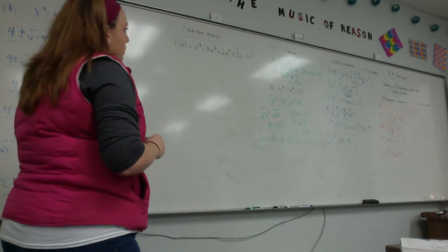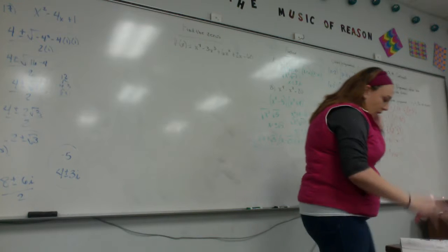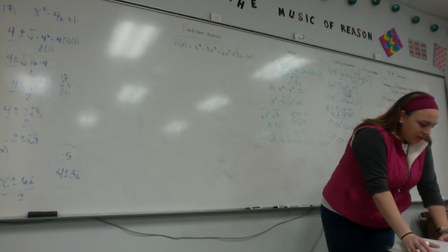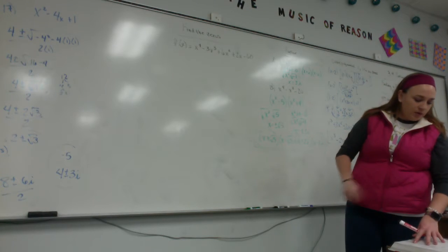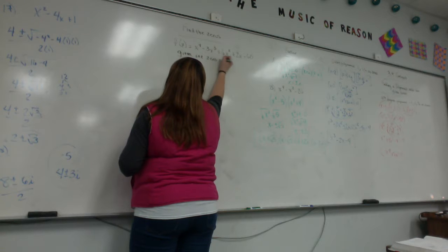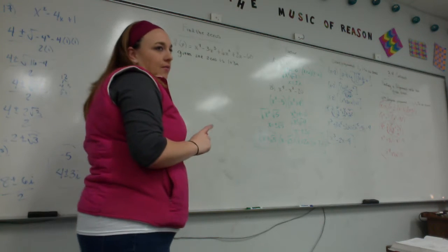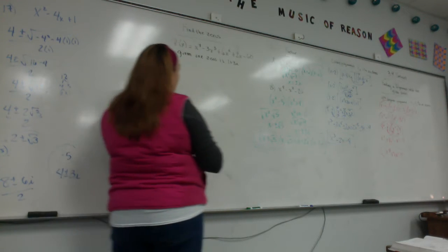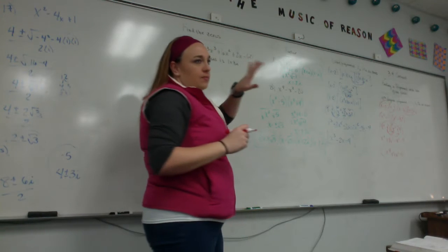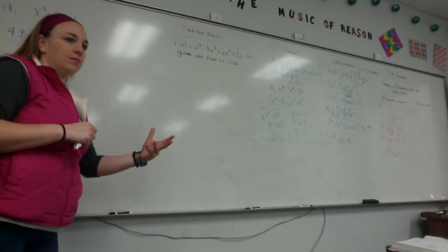Now we're talking about finding the zeros of x to the fourth minus 3x cubed plus 6x squared plus 2x minus 60. We want to find all the zeros, and I'm going to give you another piece of information: one zero is 1 plus 3i. What does that mean when they tell us one zero is 1 plus 3i? What else do we have? We have 1 minus 3i. I cannot take 1 plus 3i directly into this, nor 1 minus 3i. However, if I multiply 1 plus 3i by 1 minus 3i, I get a polynomial factor that I can then use with long division.